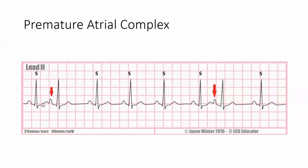Look at the P waves here and here. You notice that they are P waves, but they look different. That's a clue. When you have P waves that look different from the other P waves along with an irregular rhythm, that's a clue that it's a PAC. You can see that this beat should have happened here, and this one should have happened here — so you can see that it's premature.